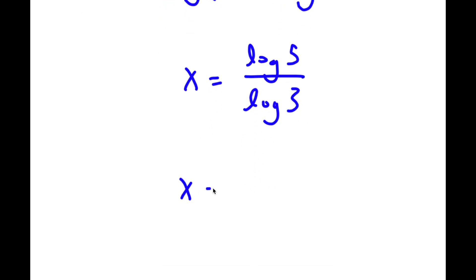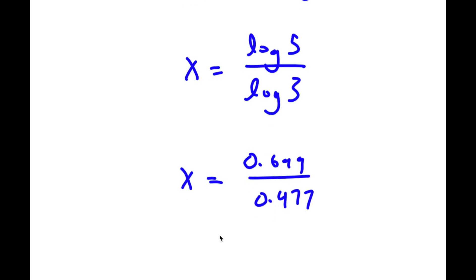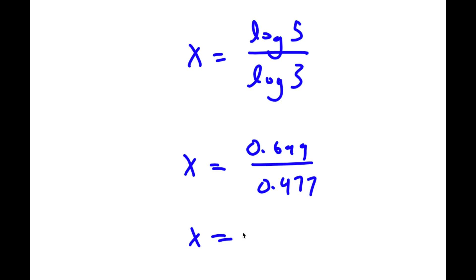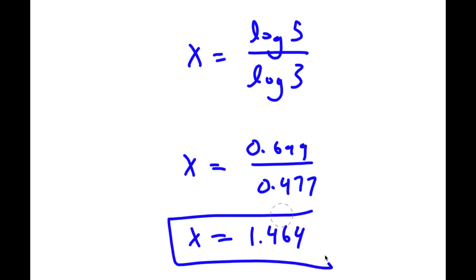Log 5 is equal to 0.699, and log 3 is equal to 0.477. Dividing these two gives 1.464. So this is my answer: x equals approximately 1.464.